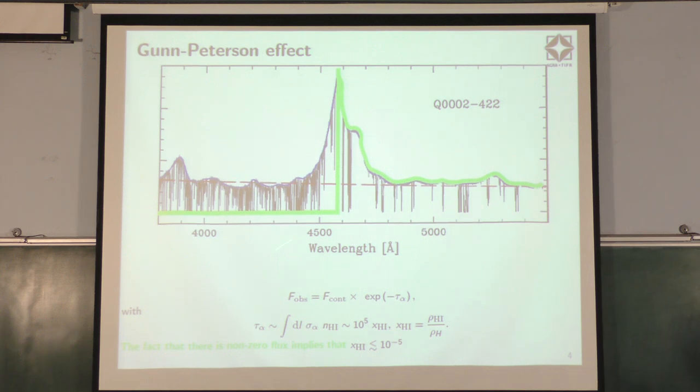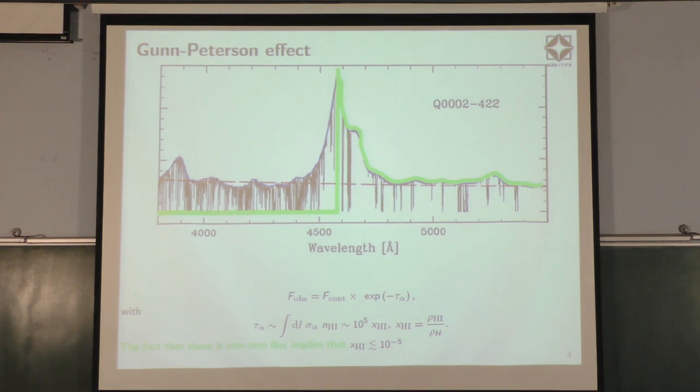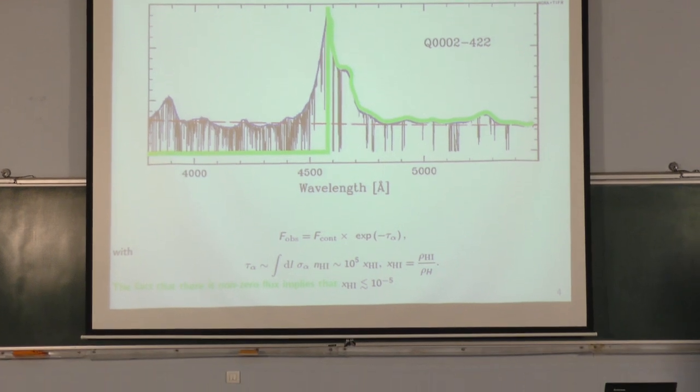Given this, as was first pointed out long ago by Gunn and Peterson, we now understand that the intergalactic medium is highly ionized, and this ionization is happening because of radiation. There is a radiation field sitting in between the galaxies, and it is photo-ionizing the hydrogen. One would like to now try to understand what is this radiation field, what is its intensity, can we understand something about the galaxies which have probably produced the radiation field, and so on.